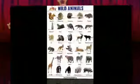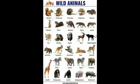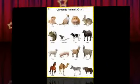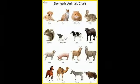Some animals live in forests or jungles. They are called wild animals, like elephant, tiger, and fox. You can see so many animals in the picture — they all are wild animals.